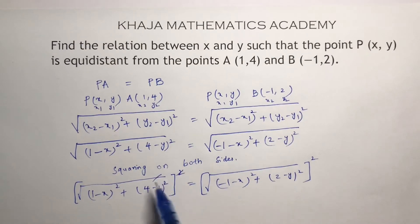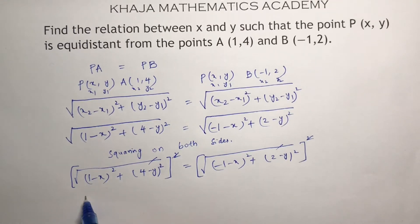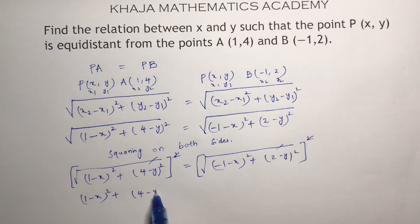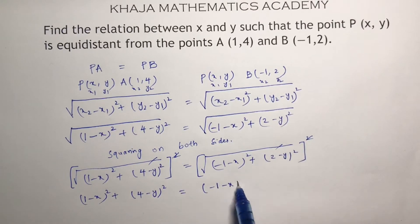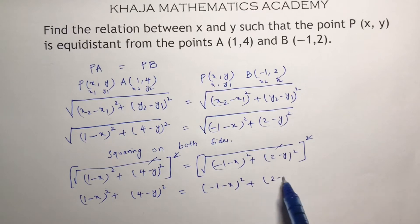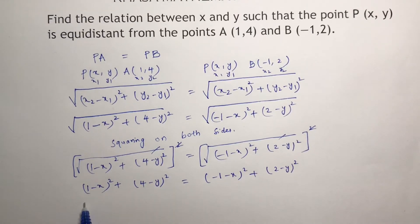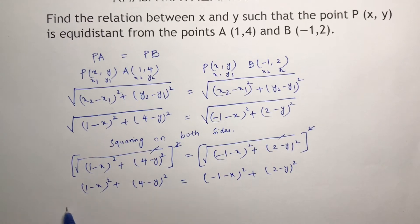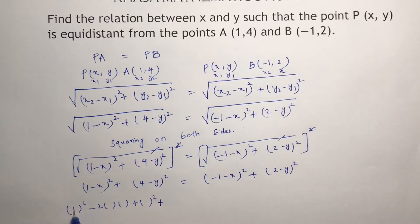After squaring both sides: (1 minus X) whole square plus (4 minus Y) whole square equals (minus 1 minus X) whole square plus (2 minus Y) whole square. This is in the form of A minus B whole square, which expands to A square minus 2AB plus B square, where A is 1 and B is X.